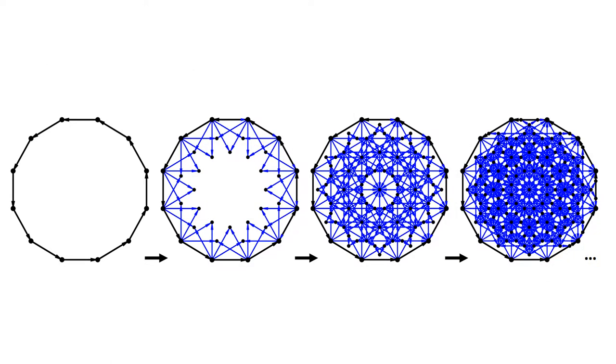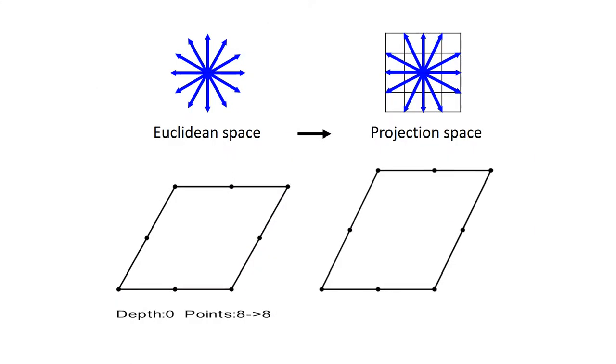The main challenge of the tiling problem is how to enumerate potential tile placements. Given a boundary, the possible locations of vertices in the Euclidean plane can be huge. As shown here,